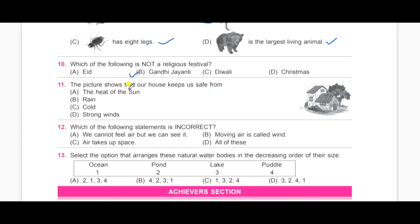Eleventh one. The picture shows that our house keeps us safe from. A, the heat of the sun. B, rain. C, cold. D, strong winds. The answer is B, rain.